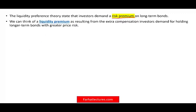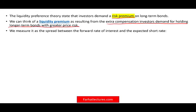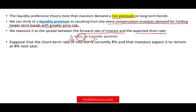Simply put, the liquidity preference theory states that investors demand a risk premium on long-term bonds. We can think of the liquidity premium as extra compensation investors demand for holding longer-term bonds with greater risk. We measure this risk as the spread between the forward rate of interest and the expected short-term rate. Whatever that expected short-term rate is, you're going to add to it a liquidity premium — whether rates are going up or down in the short term. Therefore, the forward rate should be higher than whatever you are expecting.